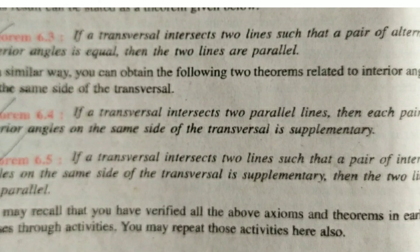Theorem 6.3: if a transversal intersects two lines such that the pair of alternate interior angles is equal, then the two lines are parallel. Theorem 6.4: if a transversal intersects two parallel lines, then each pair of interior angles on the same side of the transversal is supplementary. And the converse: if a transversal intersects two lines such that the pair of interior angles on the same side is supplementary, then the two lines are parallel. Today's class is over; in the next class, we will solve problems based on these theorems of parallel lines and transversals. Thank you.